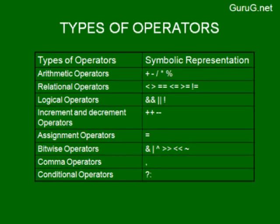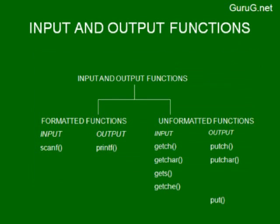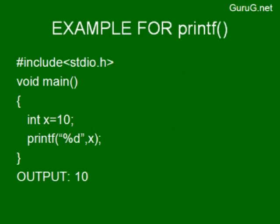These operators will be discussed further with programming examples. The next topic is input/output functions. I/O functions are classified into two types: formatted functions and unformatted functions. In formatted functions, input uses scanf and output uses printf. In unformatted functions, input uses getch, getchar, getche, and output uses putch, putchar, and puts.